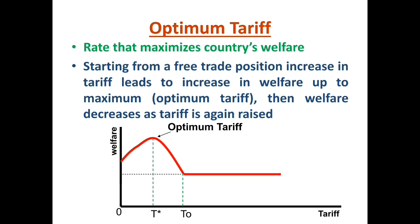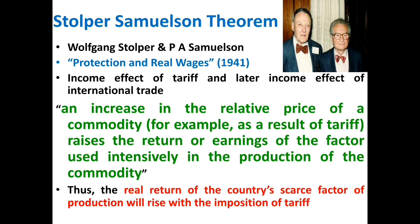The theory says that an increase in the relative price of a commodity leads to changes in factor returns. In other words, when a country imposes tariff, the return of the country's scarce factor of production will increase and the return of the abundant factor of production will decline. That is, international trade will reduce the income of the abundant factor and increase the income of the scarce factor of production. It enhances country's welfare but the gains from trade are not necessarily equally distributed.